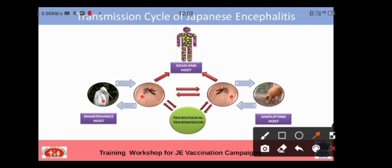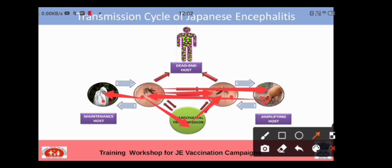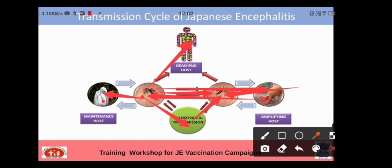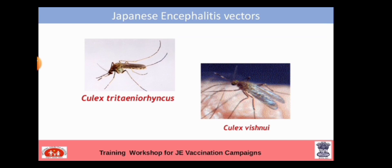Birds are the maintenance host and pigs are the amplifying host. These mosquitoes bite the maintenance host (birds), and from there they transmit transovarially to their progeny. The virus then passes to pigs, and from the pig it is transmitted back to the mosquito. These mosquitoes in turn bite human beings, so the human being is the dead end of the infection.